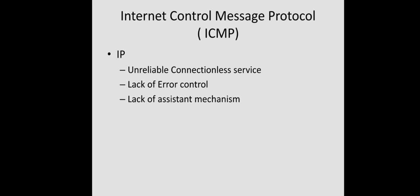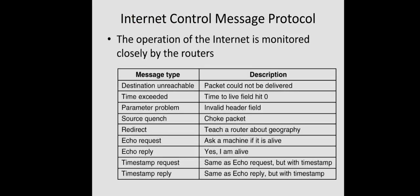ICMP stands for Internet Control Message Protocol. IP is an unreliable, connectionless service - it does not provide any method for error control and lacks assistance mechanisms. For example, if we want to check whether a particular router or host is alive or not, there is no mechanism in IP for that. So we have ICMP, which provides error control and network management through a set of messages. When a problem is detected at any router or host, the corresponding message is sent back to the source.